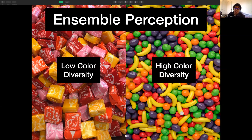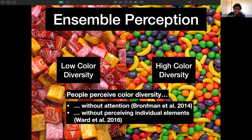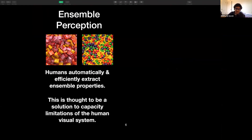All of these properties — the average shape, the average color, and the color diversity — are examples of different types of ensemble perception. Ensemble perception refers to the visual system's ability to extract summary statistical information from groups of similar objects, often in a brief glance. Today, I'm going to be focusing on color diversity. It has been found that people perceive color diversity without actively paying attention and without perceiving the individual elements that make up the image. All of what I've told you suggests that humans automatically and efficiently extract ensemble properties.